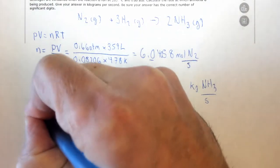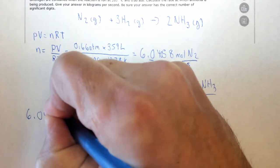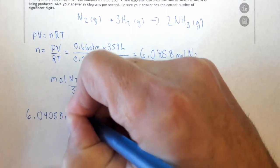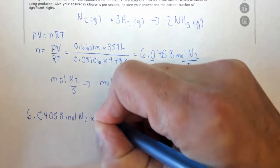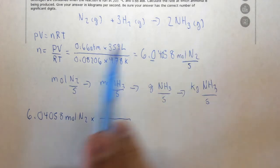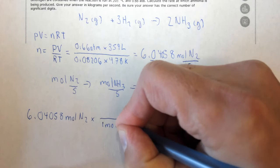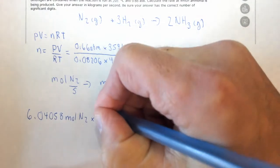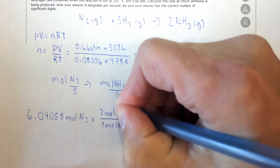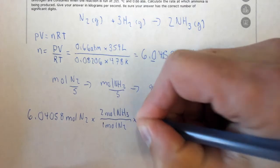So starting with 6.04058 moles of N2, times, we want to convert to moles of ammonia, we need to use our balanced chemical equation. In our balanced chemical equation, we put one mole of N2 on the bottom, two moles of NH3 on the top.